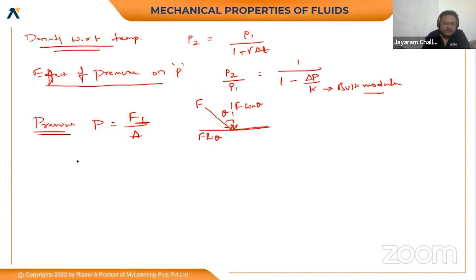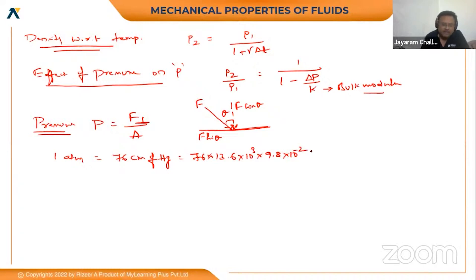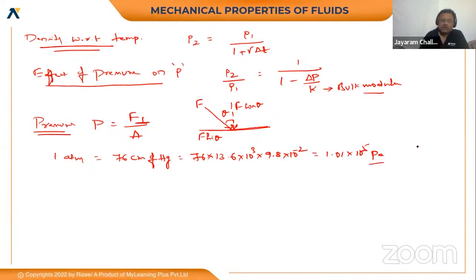Now the different values of pressure: one atmospheric pressure equals 1 atm equals 76 centimeters of Hg. That is 76 into density of mercury, which is 13.6 into 10 to the power 3, into g (with the conversion factor 10 to the power minus 2 for centimeters). Multiplying everything gives 1.01 into 10 to the power 5 Pascals, that is Newton per meter square.